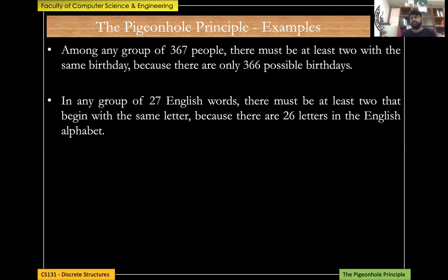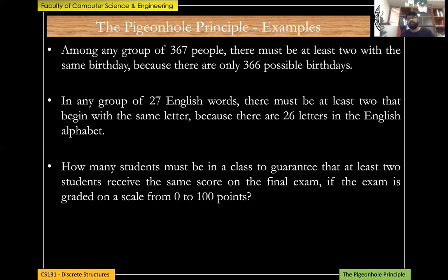Here's a question: how many students must be in a class to guarantee that at least two students receive the same score on the final exam, if the exam is graded on a scale from zero to 100 points where each score is an integer? Pause the video and try to answer this on your own.